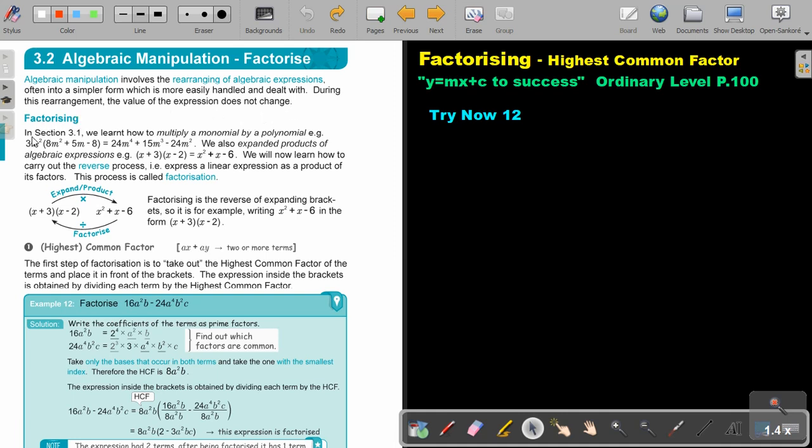Algebraic manipulation factorize. Algebraic manipulation involves the rearrangement or rearranging of algebraic expressions, often into a simpler form which is more easily handled and dealt with. During this rearrangement, the value of the expression does not change. This process is called factorization.